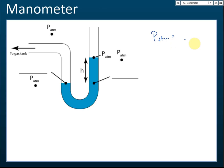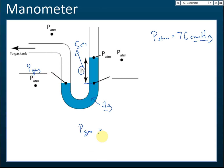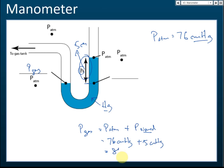Let me give an example. Say the atmospheric pressure is 76 cm Hg, and the height of mercury in the manometer is 5 cm. The pressure of the gas equals the atmospheric pressure plus the pressure of the liquid. The atmospheric pressure is 76 cm Hg, and the pressure of the mercury column is 5 cm Hg. So the gas pressure equals 76 + 5 = 81 cm Hg.